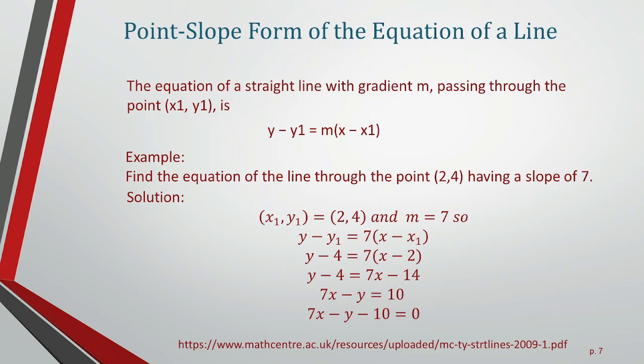To better understand this equation, let's solve an example. If a line passes through point (2, 4) with slope 7, what is its equation? Letting (x₁, y₁) = (2, 4) and m = 7: